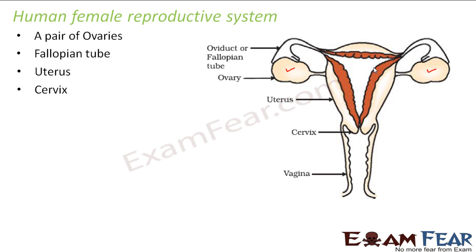Next is the cervix. The uterus ends at the cervix, and the cervix opens to the exterior through the vagina. The vagina is the opening outside. As females reach their puberty, the menstrual cycle starts. During the menstrual cycle, there is bleeding through the vagina every month. So the vagina leads to the cervix, from the cervix starts the uterus, and from the uterus on both sides are the fallopian tubes, which connect to the ovaries on each side.